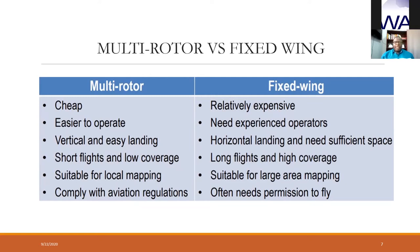The multi-rotor has vertical and easy landing, while the fixed-wing requires horizontal landing and needs sufficient space. There is another type known as VTOL — vertical takeoff and land — which takes off vertically, operates in horizontal mode, then comes back to land vertically. It's another type of fixed-wing drone. But basically there are two types: the multi-rotor and the fixed-wing.